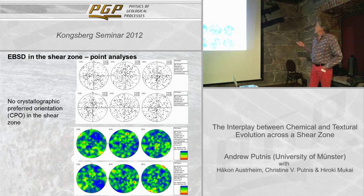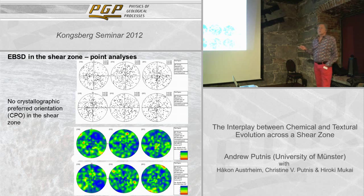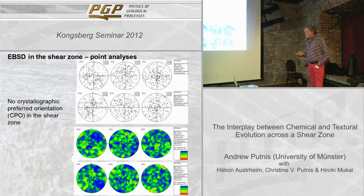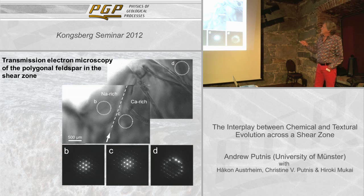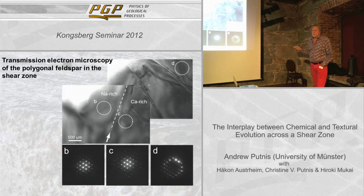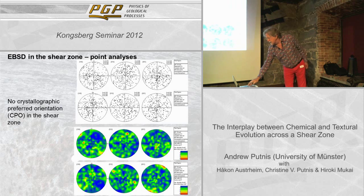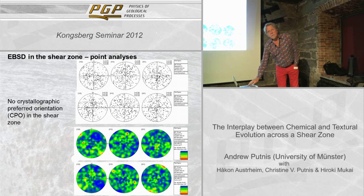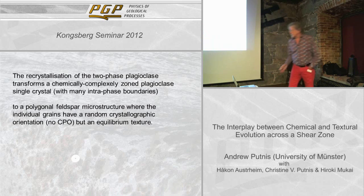In the shear zone, these are point analyses of 400 different grains — you see the difference between what we had before and what we have now. We basically have no crystallographically preserved orientation. There's a TEM image of this polygonal feldspar in the shear zone: it has very little microstructure, very few dislocation microstructures. The orientation of the crystals in the shear zone doesn't bear any relation to any glide planes in plagioclase. So basically the criterion that people use is: when you have no crystallographic preferred orientation, this did not deform by dislocation glide — in other words, this deformed by some other kind of mechanism that involved fluids. That's my conclusion.